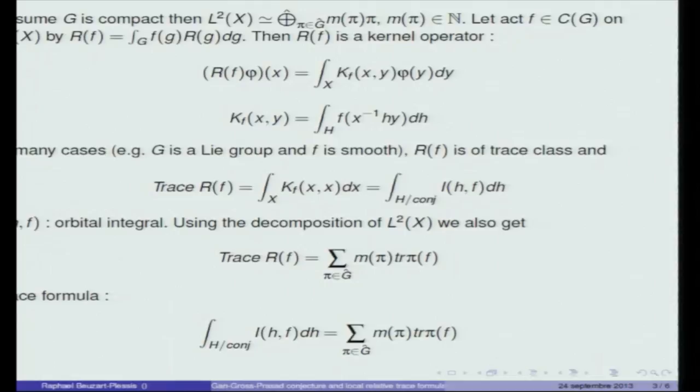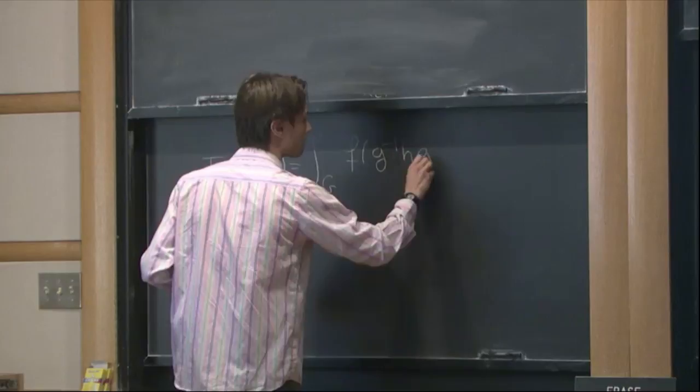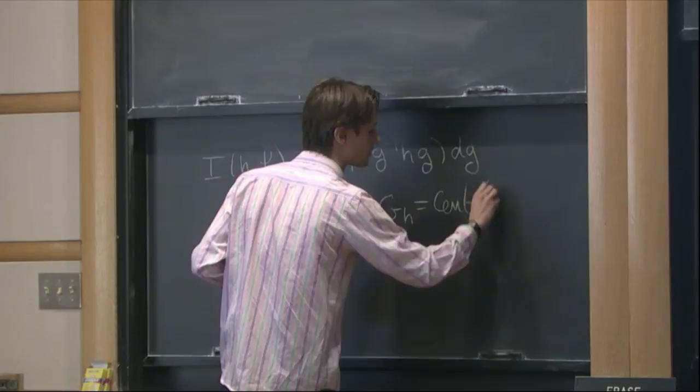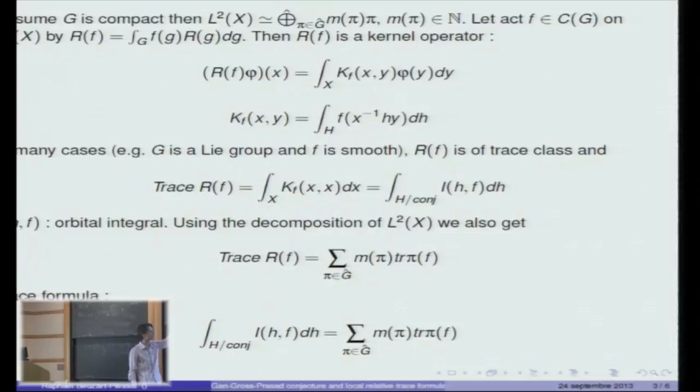This is just the integral over the orbit of H under conjugation. Here GH is the centralizer of H in G. There is another way for computing the trace of R of F by using the decomposition of L2 of X in terms of irreducible representations. It gives that the trace of R of F is the sum over the pi in the unitary dual of G of the multiplicity M of pi times the trace of pi of F. By equating the two ways to compute the trace of R of F you get the trace formula. You see that the pattern we will see in other trace formulas is that on the left hand side you have something geometric, meaning that it involves orbital integrals, and on the right hand side you have something spectral, meaning that it involves trace of representations.